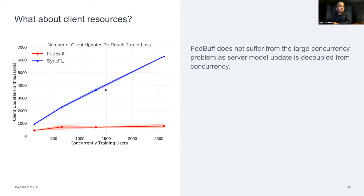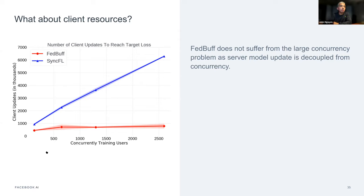Regarding client resources: FedBuff does not suffer from the large concurrency problem due to the decoupling of client sampling and server update step. We keep K equal to 100 throughout, keeping the server batch size small. Therefore we don't suffer from the large batch problem compared to SyncFL, and we don't use more and more resources to reach the same target loss. We're able to train faster at high concurrency without using up client resources — checking two of our three priority boxes. And we can do secure aggregation, which also checks the privacy aspect.